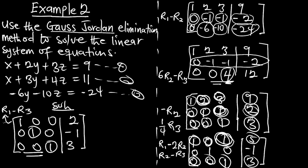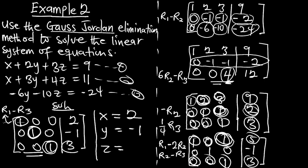This column represents z, this represents y, and this represents x. Straight away from the solution: x, from the first row, is 2; y, from the second row, is negative 1; and z, from the third row, is positive 3. Using the Gauss-Jordan method, make everything on the principal diagonal 1 and everything else 0, and you will get your answer simply.